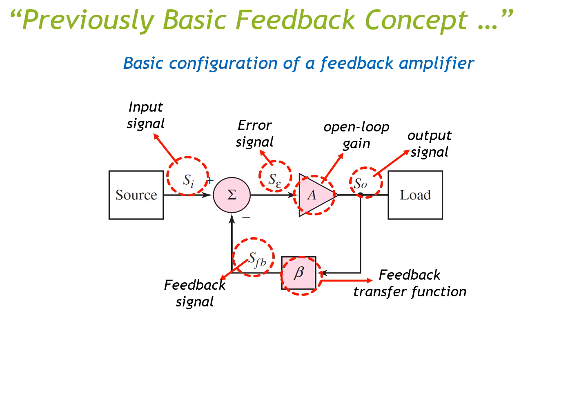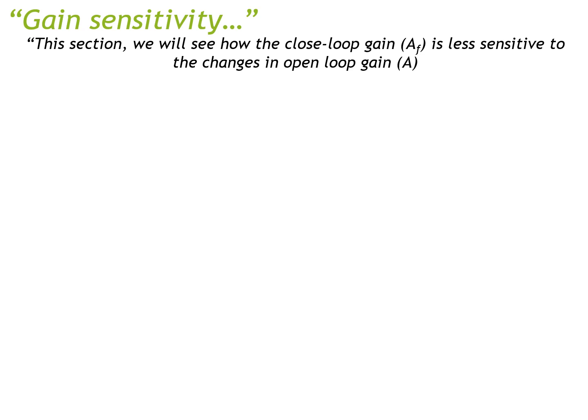The first topic is gain sensitivity. Even though the name is 'gain sensitivity,' it's a little bit deceptive. In this section we'll actually see how the closed loop gain is going to be less sensitive to changes in the open loop gain. The open loop gain — the gain of your basic amplifier — can vary due to individual transistor parameter changes. Therefore, in order to make your system more robust and make the gain more stable, you need to make your gain less sensitive to those fluctuations.